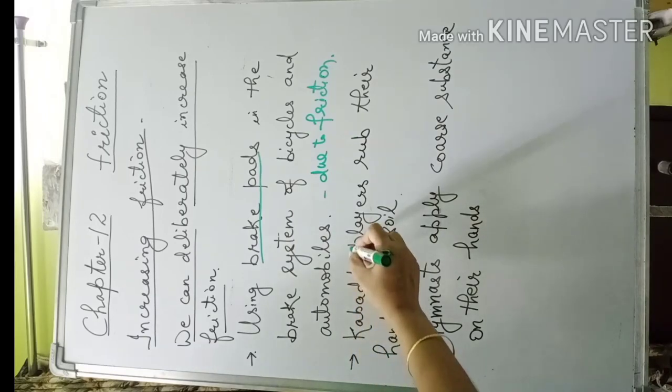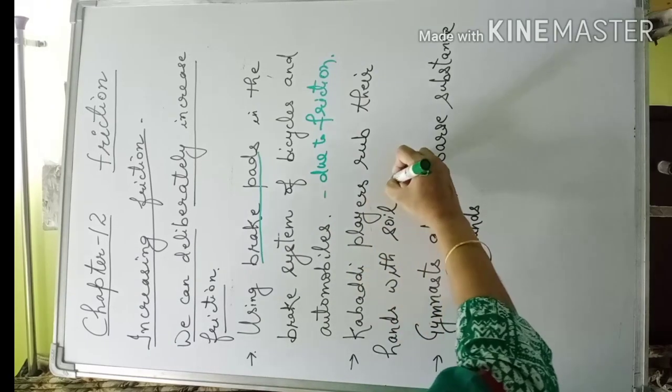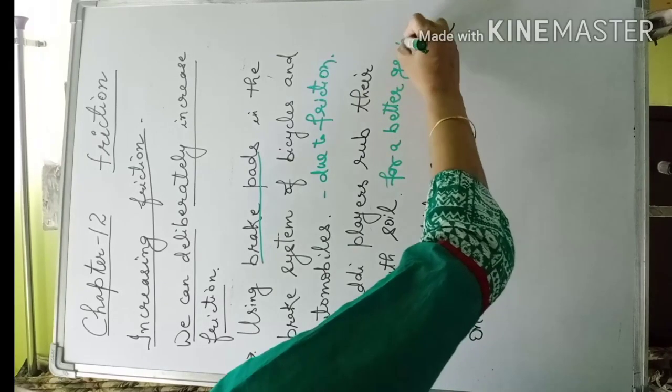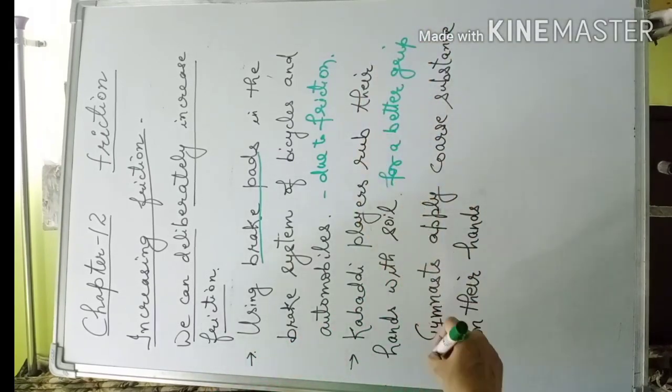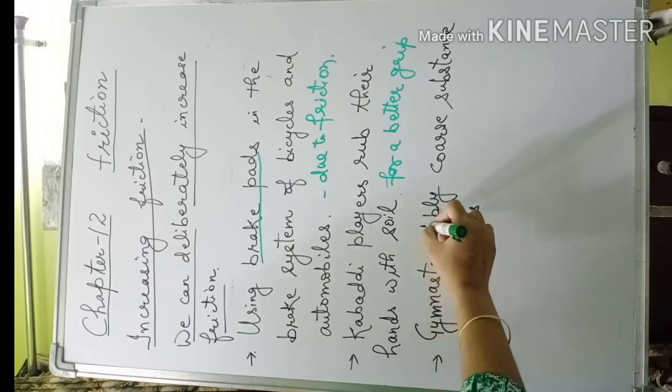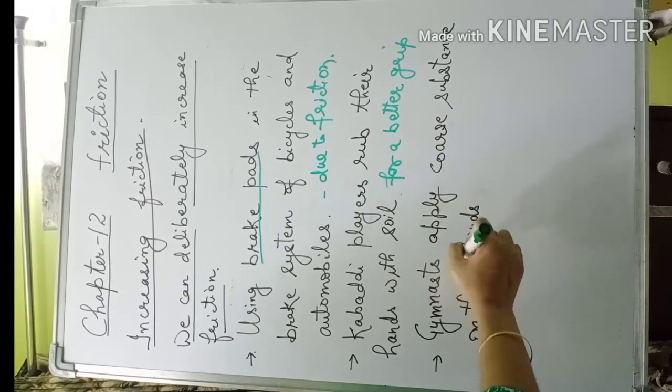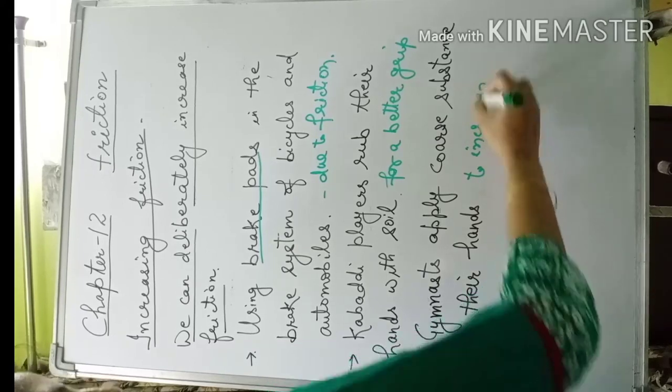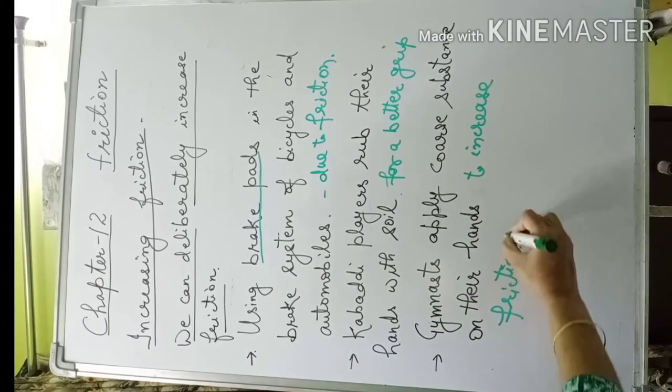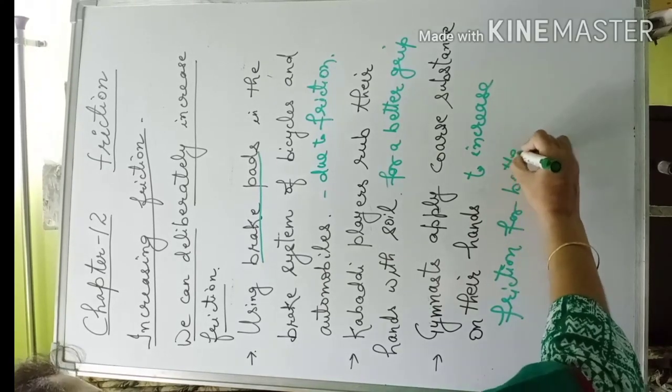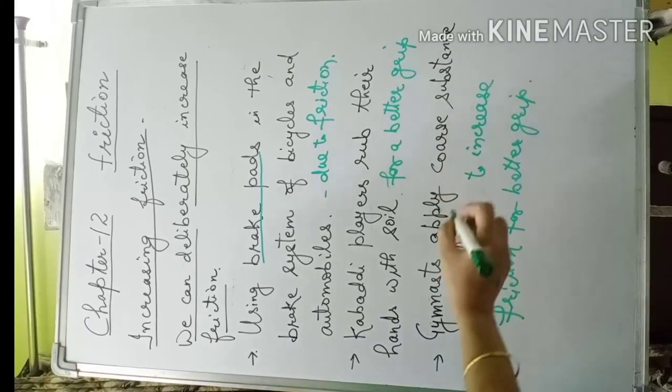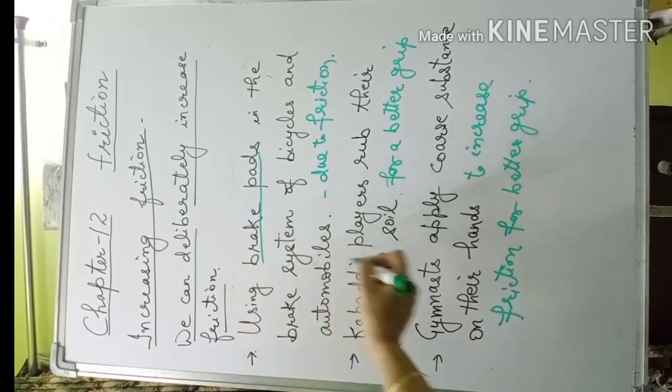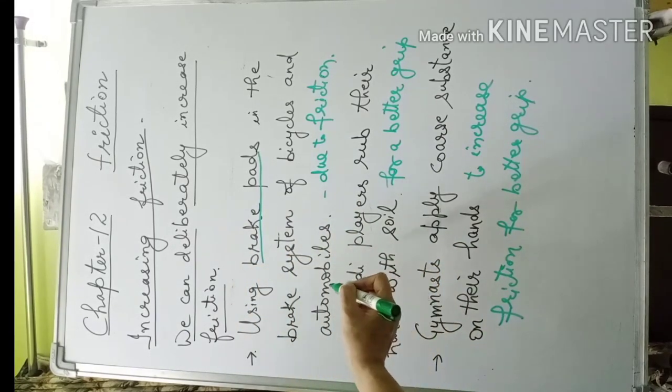Second point: Kabaddi players rub their hands with soil for a better grip of their opponents. Third: gymnasts apply some coarse substance on their hands to increase friction for a better grip. We want to increase friction by some way. These are examples where we are deliberately increasing friction.